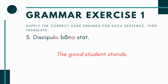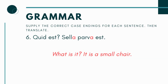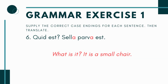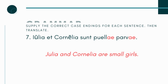Number 6 is a question: 'Quid est?' — What is it? — and then you have the answer: 'sella___ parva___ est.' The verb is est, so again the verb is singular, meaning the subject needs to be singular — sella with an -a. Since the noun sella is singular, the adjective parva also needs to be singular. So you're saying: what is it? It's a small chair — sella parva est.